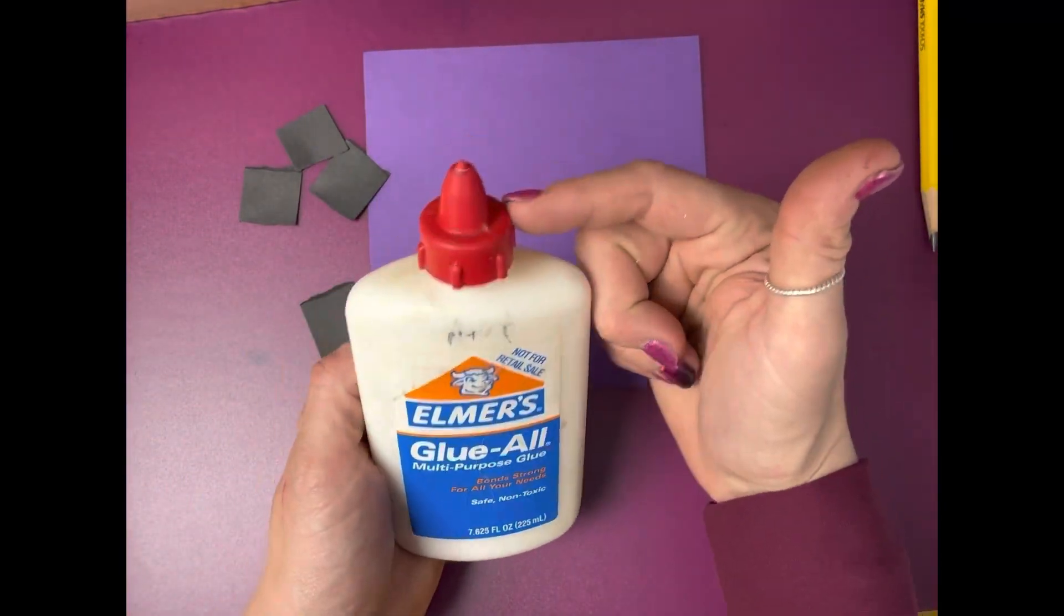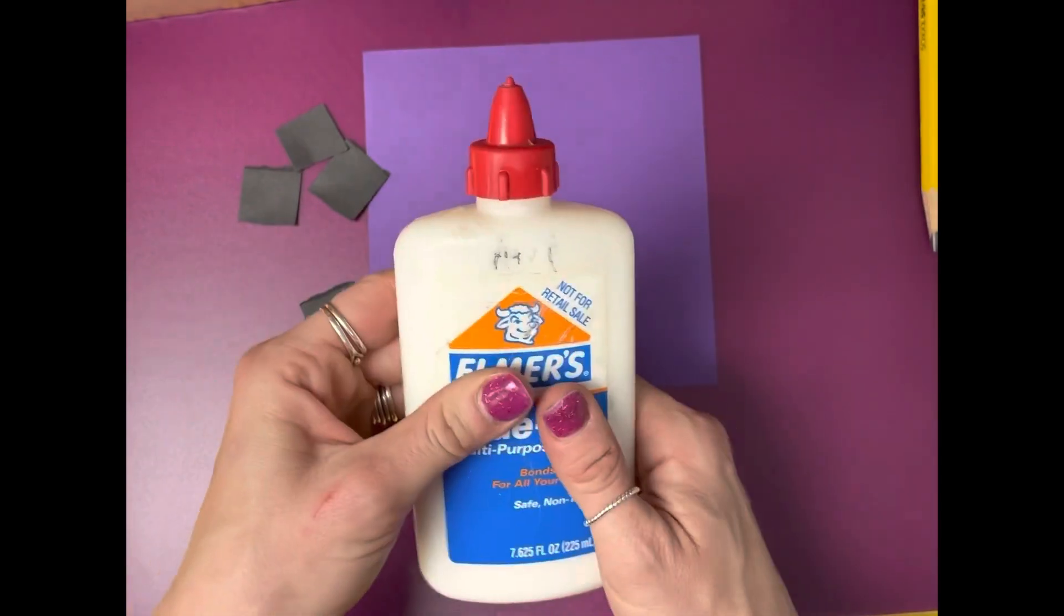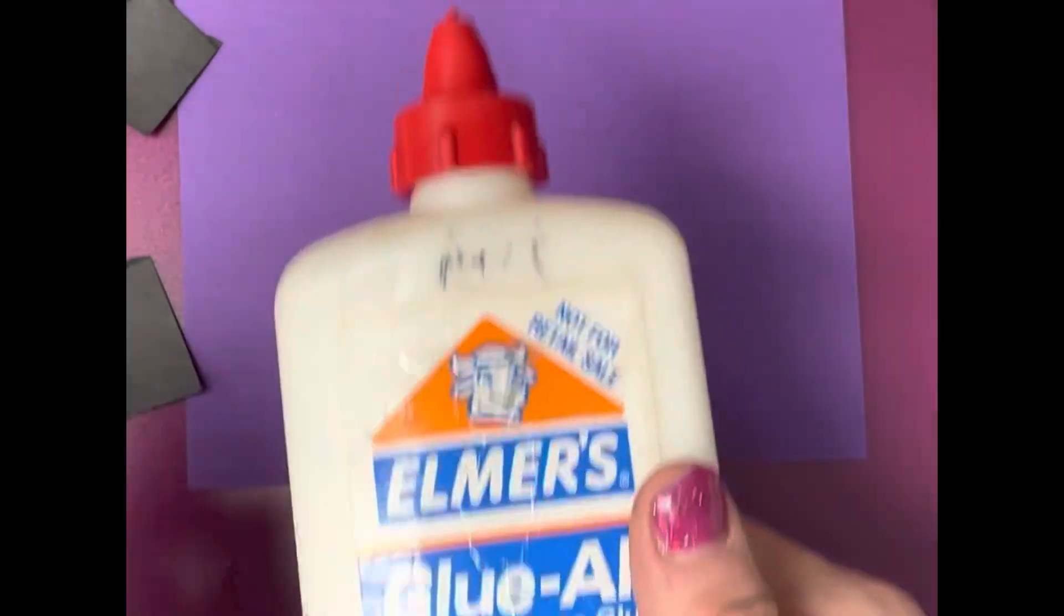This is another glue option for you. These are the tap and glue lids. You don't ever take the top off. First thing, take a look at the tip and see if there's any dried glue. If so, just peel it right off.